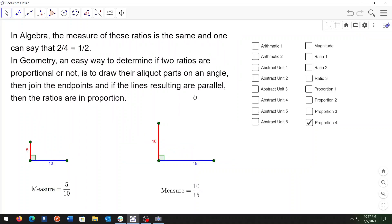In algebra, the measure of these ratios is the same and one can say that two quarters is equal to one-half. In geometry, an easy way to determine if two ratios are proportional or not is to draw their aliquot parts on an angle. Then join the endpoints and if the lines resulting are parallel, then the ratios are in proportion. And so I'm going to show a demonstration here.